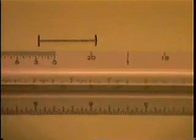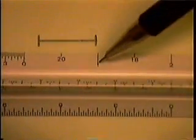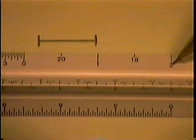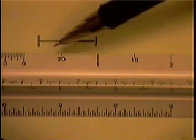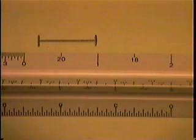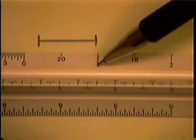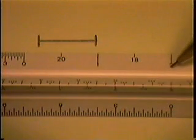And so these markings are the foot markings. The 20 and the 18 we'll ignore. They go with another scale coming from the other side. So, this is one foot, two foot.